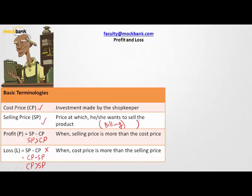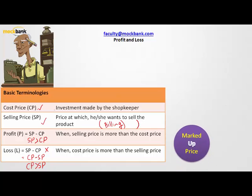Since we've understood cost price, selling price, profit, and loss, let us understand the marked price, or MP. The marked price is the price that a shopkeeper shows to his or her customer, but the customer would not be paying this price — the customer would only be paying the selling price, which is also the billing price.